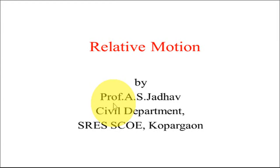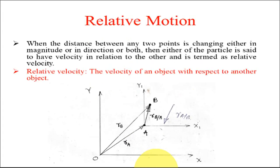Hello friends, in this video we are going to learn concepts of relative motion. When the distance between any two points is changing either in magnitude or in direction or both, then either of the particles is said to have velocity in relation to the other, and this is termed as relative velocity. In simple terms, relative velocity is the velocity of an object with respect to another object.